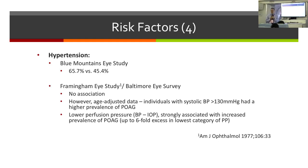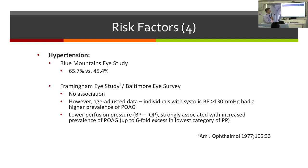Hypertension is a modest risk factor for glaucoma. In the Blue Mountains Eye study, glaucoma was much more common in patients with systemic hypertension. Other studies show that individuals with a systolic blood pressure over 130 mmHg had a higher prevalence of primary open-angle glaucoma.